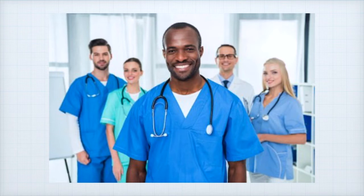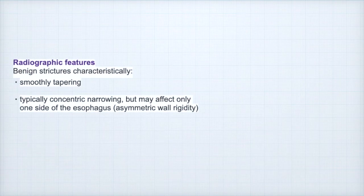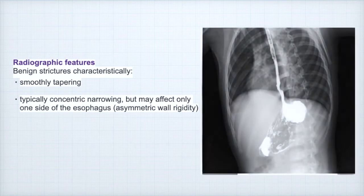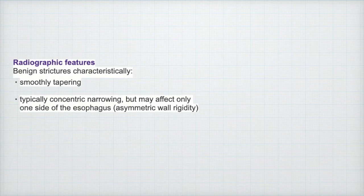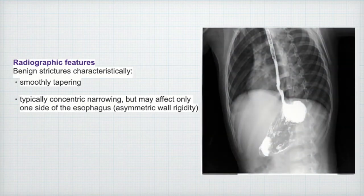As you know, caustic ingestion produces esophageal strictures, which refers to any persistent intrinsic narrowing of the esophagus. Let's remember these features on the contrast esophagogram. For benign strictures, we have smooth tapering and typically concentric narrowing, but it may affect only one side of the esophagus. You can see this indicated by the yellow arrow in this case.